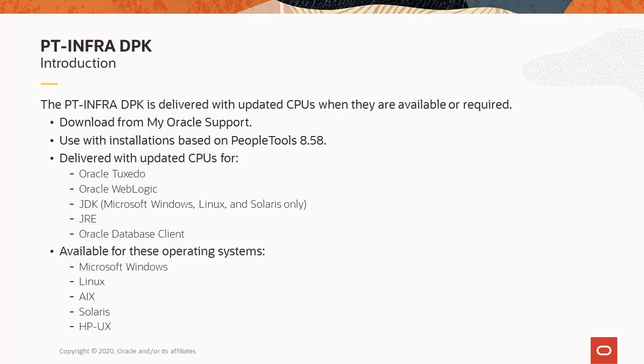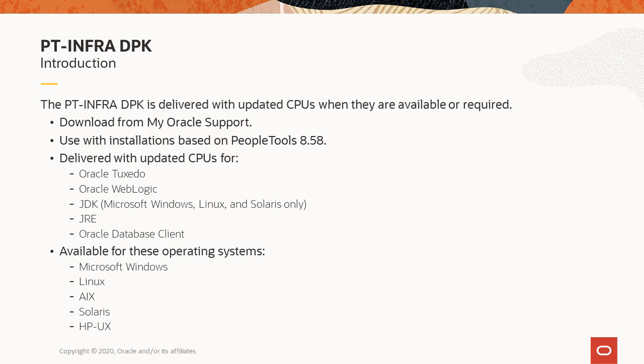Oracle delivers the PT-Infra-DPK when updated critical patch updates for one or more of the software components are available or required. It is not available on the same schedule as PeopleSoft PeopleTools or the PeopleSoft images. You can find the PT-Infra-DPK in the Patches and Updates area of My Oracle Support. The PT-Infra-DPK is specific to a given PeopleTools release — you can't use the PeopleTools 8.5.8 version, for example, to install software components included on a PeopleTools 8.5.7 installation.